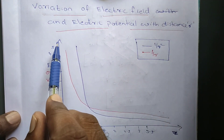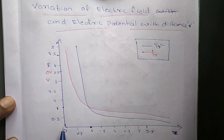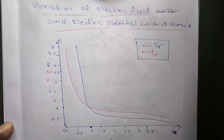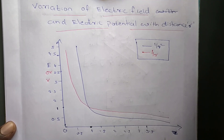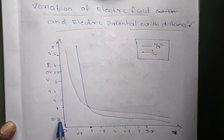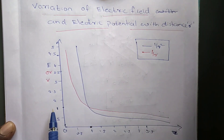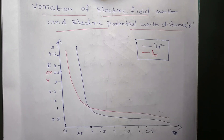In the y-axis I am going to take electric field and electric potential, and in the x-axis the distance r. For the blue line, these values represent the electric field, and for the red line these values represent the electric potential.